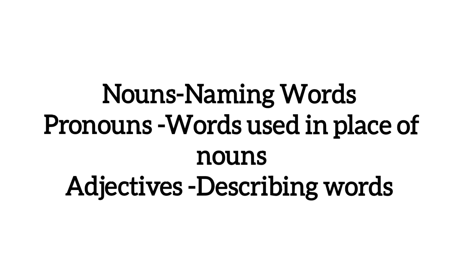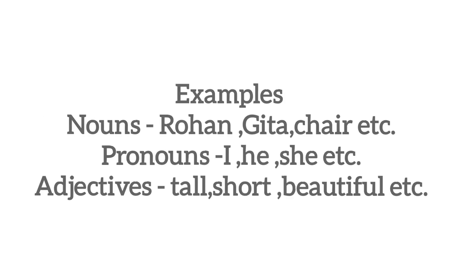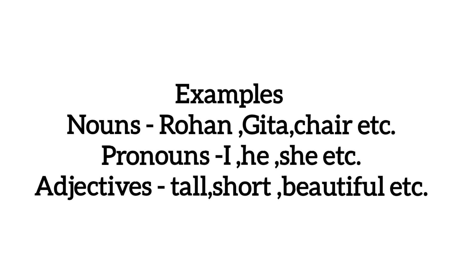और adjectives होते हैं describing words. जिन words को हम दूसरी nouns या pronouns को describe करने के लिए — कि वो चीज़ कैसी है — उसके लिए use करते हैं. For example, nouns: Rohan, Geeta, chair. यह सारी examples हैं nouns की.